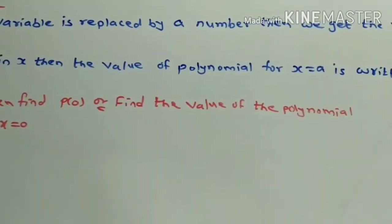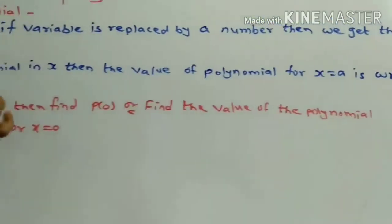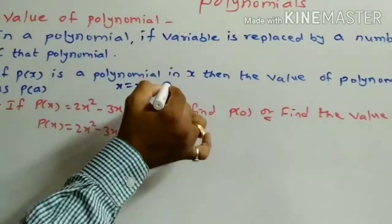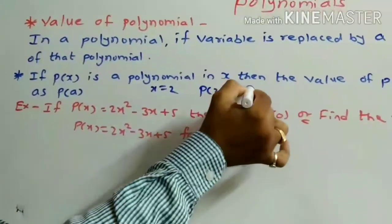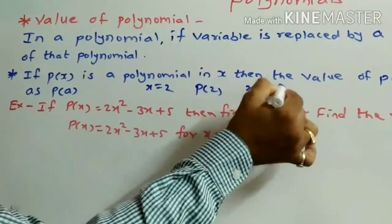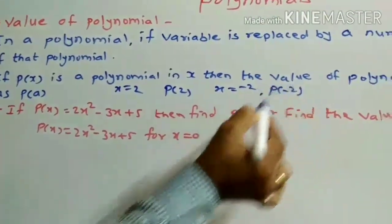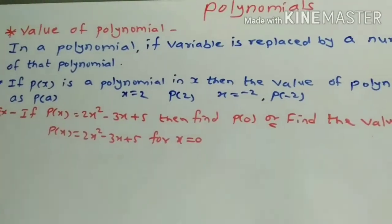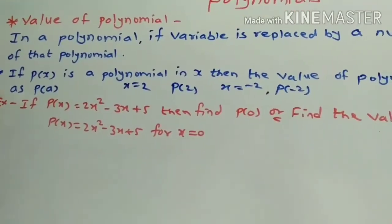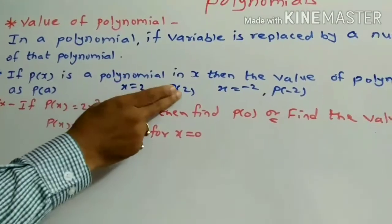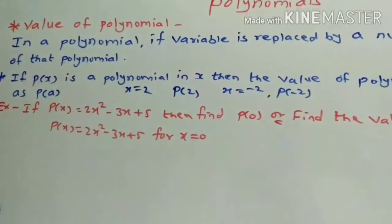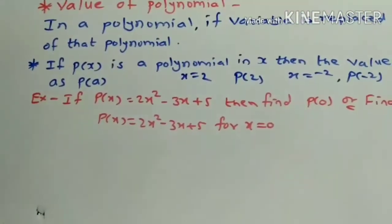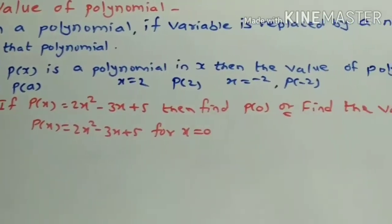If the value of variable x is equal to 2, then the value of that polynomial is p(2). If x is equal to minus 2, then the value of the polynomial is p(minus 2). We get the value of that polynomial by putting the given value of x, and then we get the value of the polynomial.